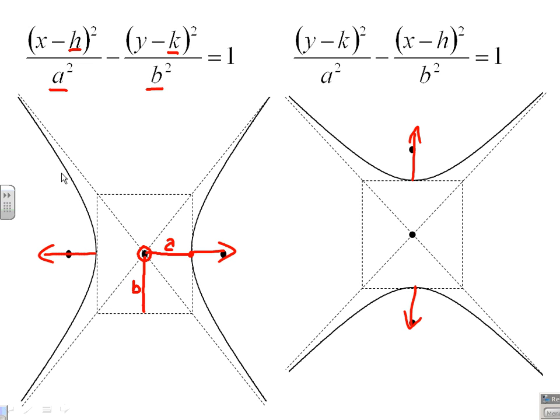In this case of the first equation here, my first term is positive. My X's are positive, which means this is going to open in an X direction. And the positive term is put over A. A is not necessarily bigger than B. In fact, they could be equal. A could be smaller than B. A could be larger than B.